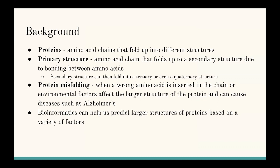Protein folding is extremely important because what can happen in protein misfolding is that if a wrong amino acid is inserted into the polypeptide chain, or different environmental factors like UV radiation affect the DNA sequence, that can actually affect the larger quaternary structure of the protein and cause different diseases like Alzheimer's. Bioinformatics and computational biology can help us predict the larger structures of proteins based on several factors.